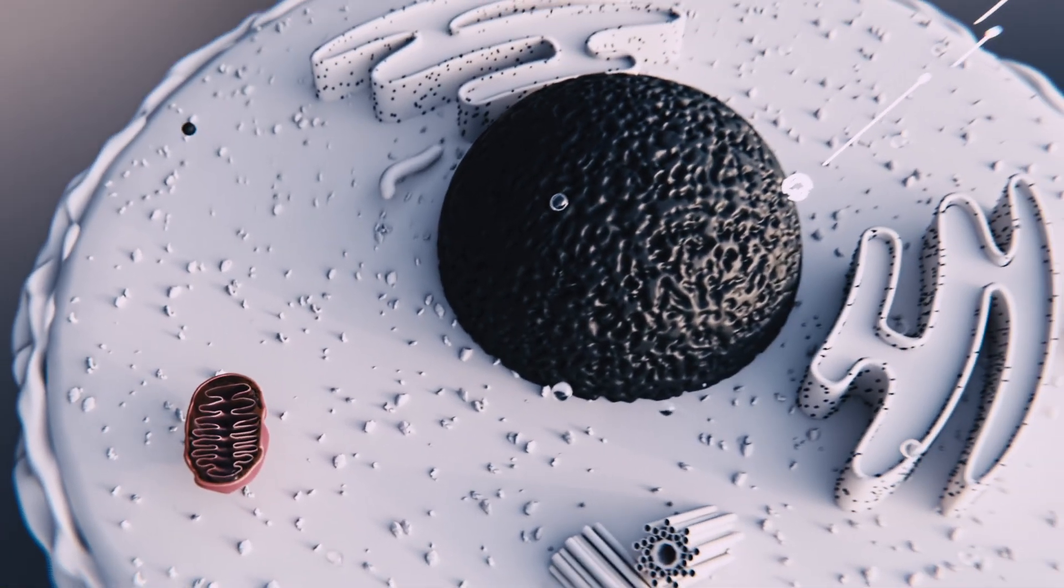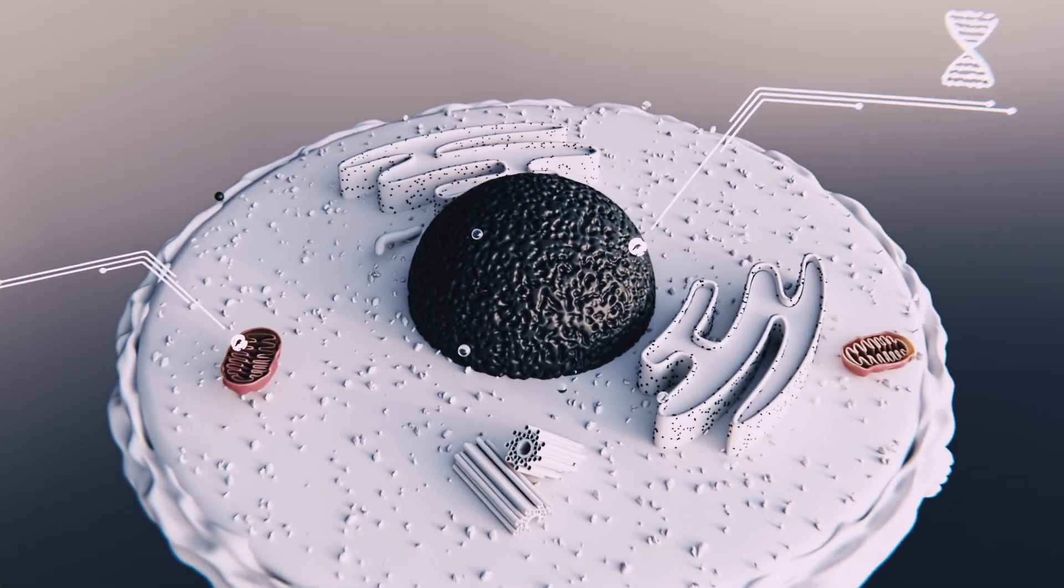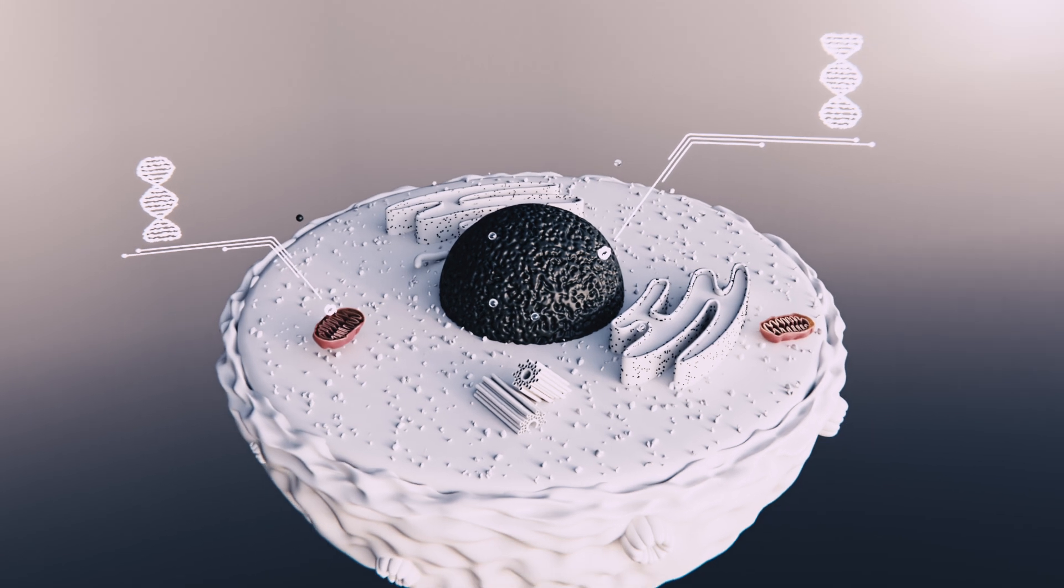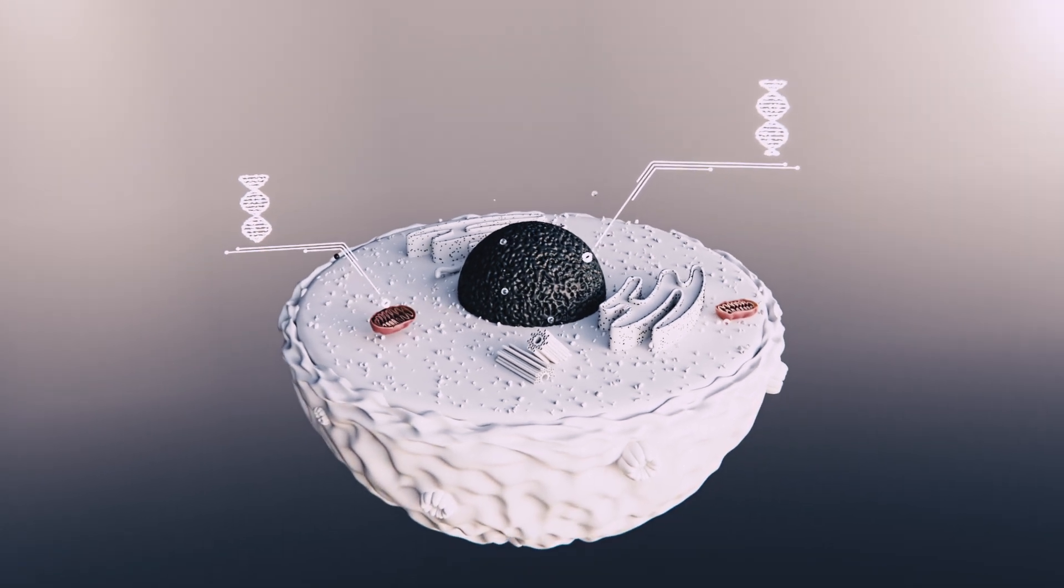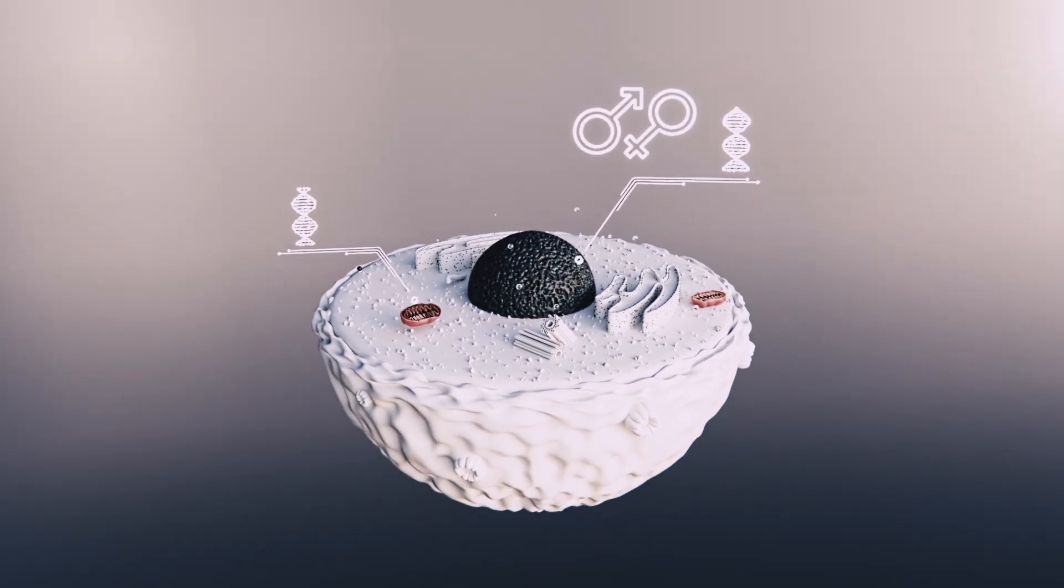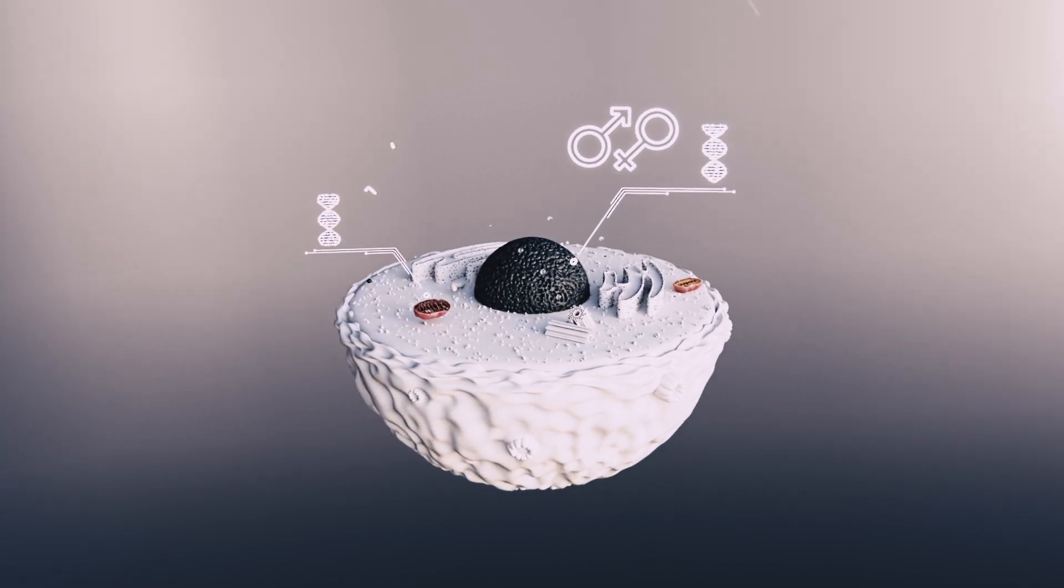You see, mitochondria are the only organelles other than the nucleus that contain genetic material. But while the DNA in the nucleus is a mix from both parents, the mitochondrial DNA is derived solely from the mother.